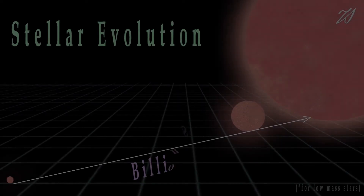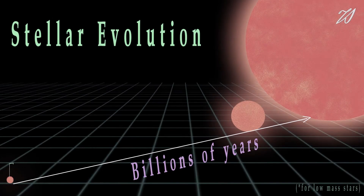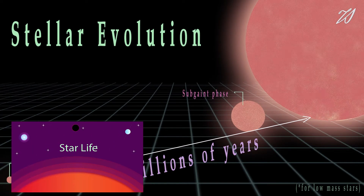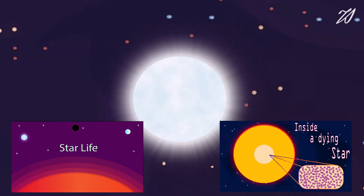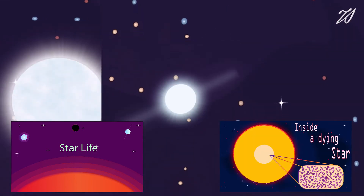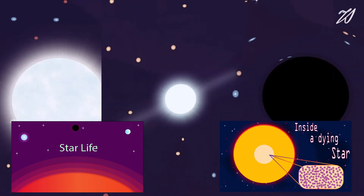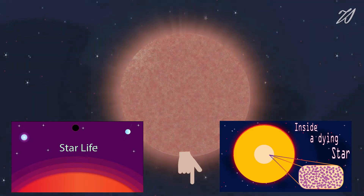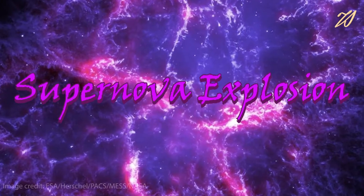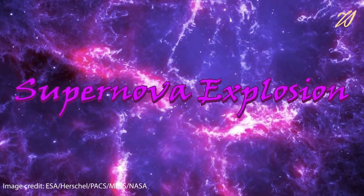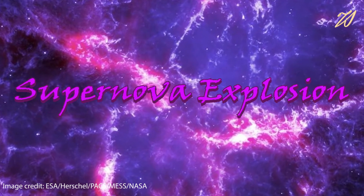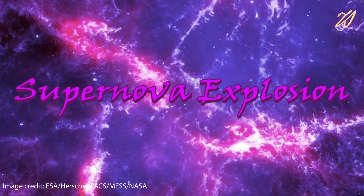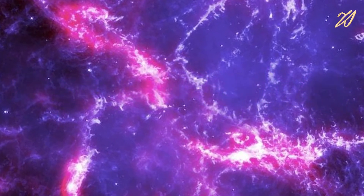In the last two videos, we have seen how different stars live their life and how they end up. If you haven't watched it yet, the link is given in the description box. In this video, we will see different types of supernovae and how it happens.